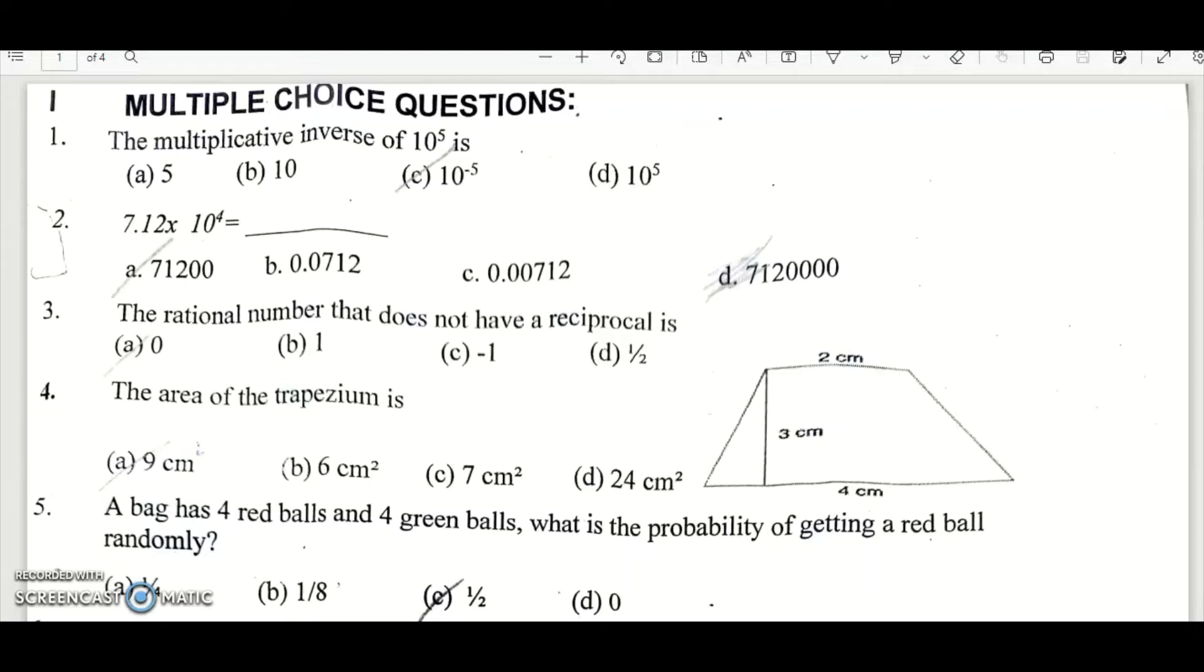7.12 into 10 power 4 is, it is 7, so it is 2 zeros cancel. So it is option A, 71200.